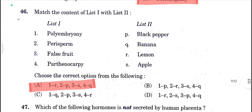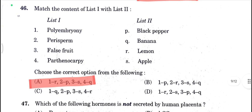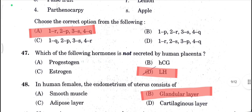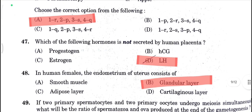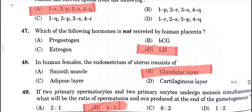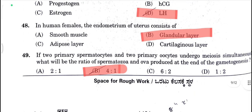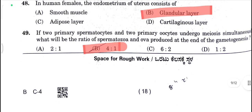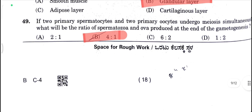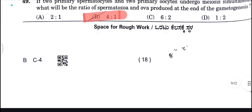Zygotene is your correct answer. Next, A is your correct answer. Which of the following is NOT secreted by human placenta? LH is your correct answer. Next, glandular layer is your correct answer here. The ratio is 4:1 for two primary spermatocytes and two primary oocytes undergoing meiosis — so this answer is 4:1.